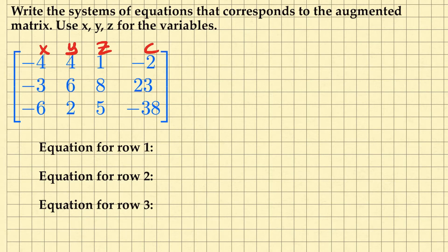So if I wanted to write this out as a system, I would have negative 4x. So you use the value of the coefficient plus 4y plus z. And this would equal negative 2.